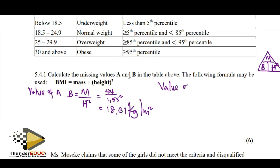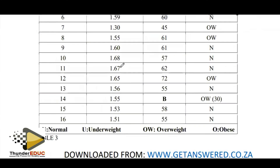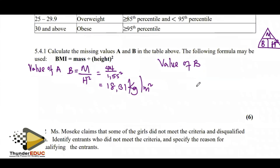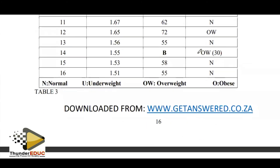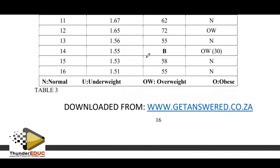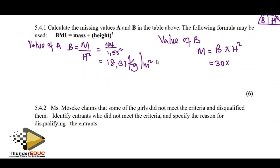Now let's look at value B. B is under mass. Using the triangle method: mass = BMI × height². Under B the BMI is 30 and the height is 1.55 m. So: mass = 30 × 1.55² = 72.08 kilograms.